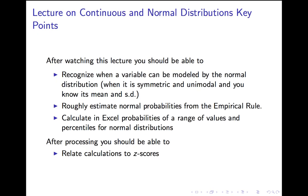Okay. So, after watching this lecture, here is what you should be able to do. You should be able to recognize when a variable can be modeled by the normal distribution, that is, when it's symmetric and unimodal, and you know its mean and standard deviation. You should be able to roughly estimate normal probabilities using the empirical rule. That's good to check your calculations when you do the third thing, which is calculate in Excel the probabilities of a range of values and percentiles for normal distributions.